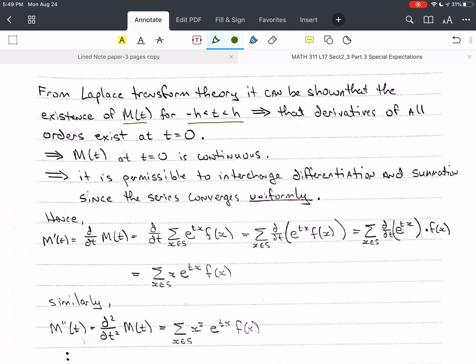that the derivatives of all orders exist at t equals zero. Once you get to zero, you can still take the derivative, and it's zero. So, that's what it means by all orders.